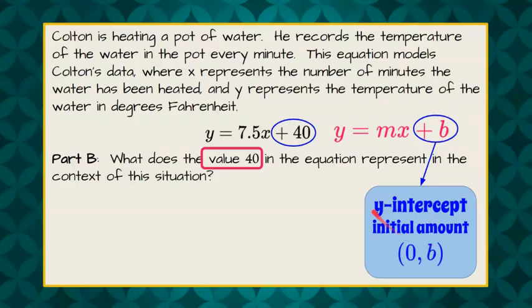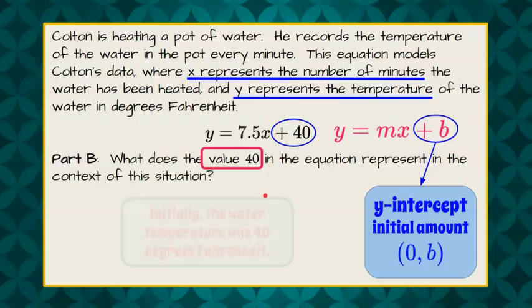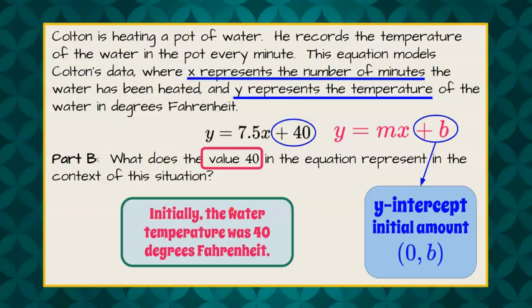If we go back up, when our minutes are 0, when we haven't started recording time, that is our initial temperature. So we can say initially the water temperature was 40 degrees Fahrenheit.